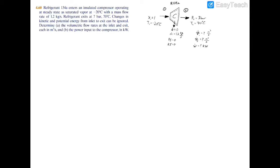Here we have another example of energy analysis over a control volume. We have R134a entering an insulated compressor — the insulation means heat transfer is equal to zero. It's operating at steady state, and the refrigerant is a saturated vapor at the inlet, so quality x₁ equals one. The inlet temperature is negative 20 degrees Celsius, and at the exit we have a pressure of 7 bar and a temperature of 70 degrees Celsius.